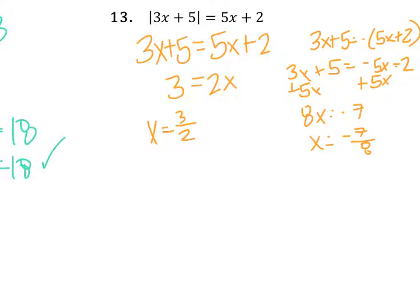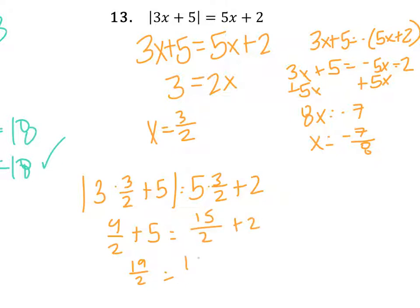I need to check these. So 3 times 3 halves plus 5 equals 5 times 3 halves plus 2. So that would be 9 halves plus 5, or 19 halves. And let's see if this is 19 halves: 15 halves plus 2, which is 19 halves. Alright, so I know that x equals 3 halves is definitely a solution, not extraneous.